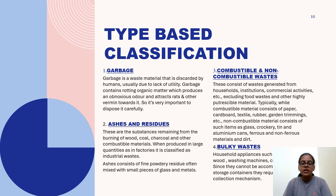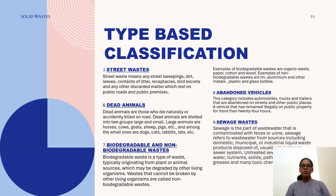Next, bulky waste. Housing appliances such as refrigerators, wood, washing machines, crates, vehicles, etc., that cannot be accommodated in normal storage containers — they require a special collection mechanism. Street waste means any street sweepings, dirt, contents of litter, and leaves that rest on public roads and public premises.